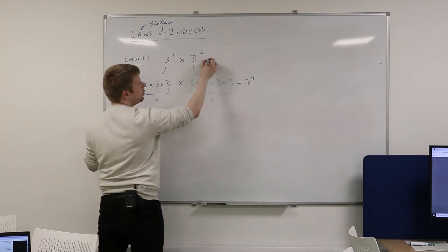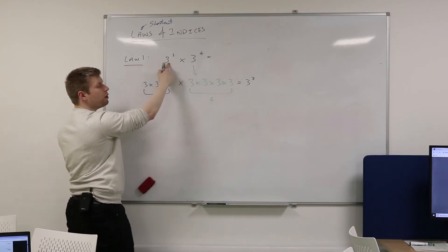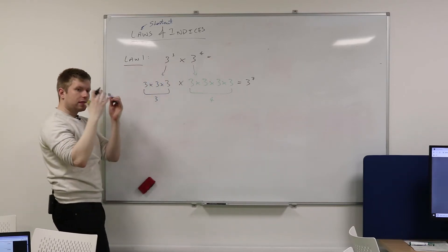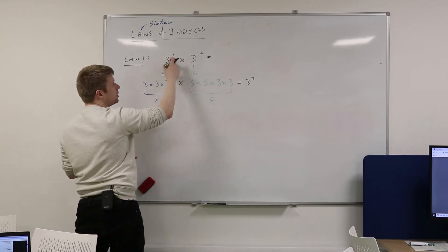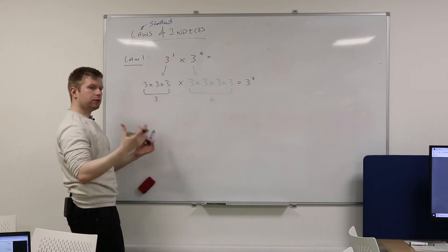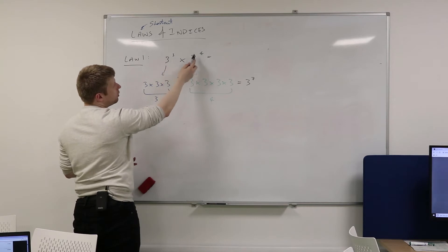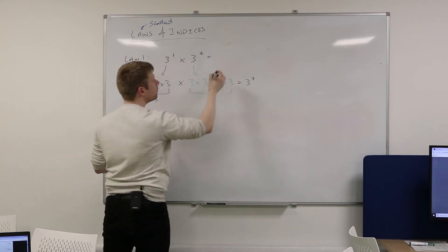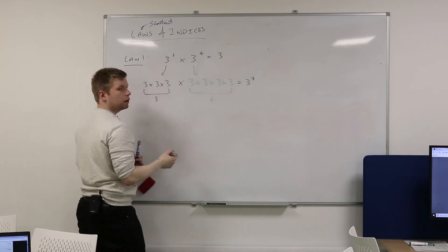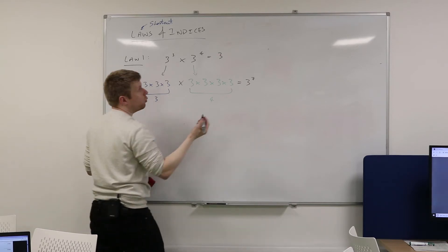So the shortcut, which we can say then, is that if we want to deal with something like this, so we have the same base, both 3's, and we want to multiply them together, would you be happy that we just take powers and what do we do to them? We add them, or we sum them.